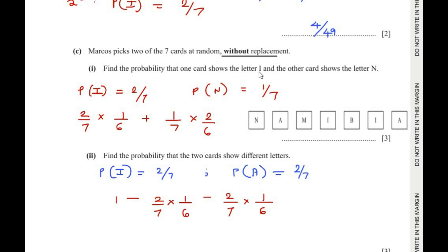We need the probability that one card shows letter I and the other shows letter N. There are two I's, so P(I) = 2/7. There is one N, so P(N) = 1/7. In the first possibility, Marcos picks I first (probability 2/7), then N — with 6 cards remaining, P(N) = 1/6.